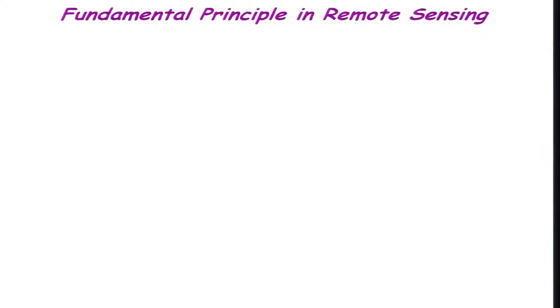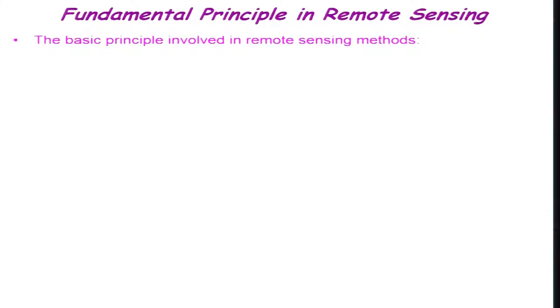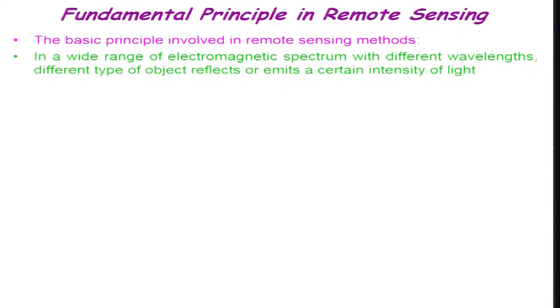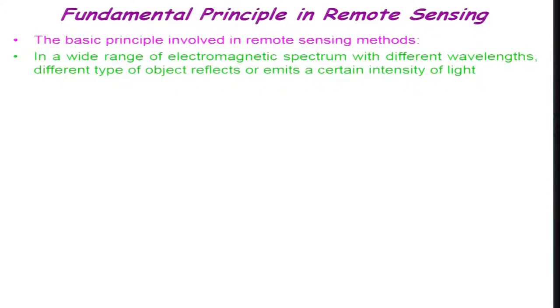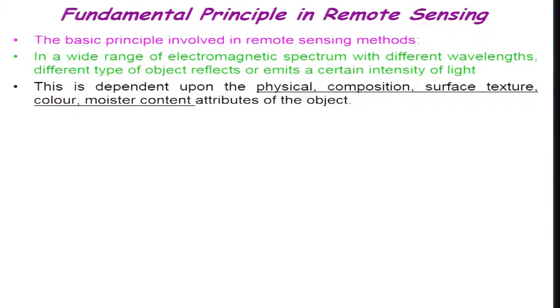In some of the bands, the material or the object on the earth surface will not reflect any light. The energy which has been radiated or incident on that object will be absorbed. The basic principle involved in remote sensing methods is that across a wide range of the electromagnetic spectrum with different wavelengths, different objects reflect or emit a certain intensity of light. Part of it will be absorbed and part of it will be reflected, and that depends on the physical composition, surface texture, color, and moisture content.